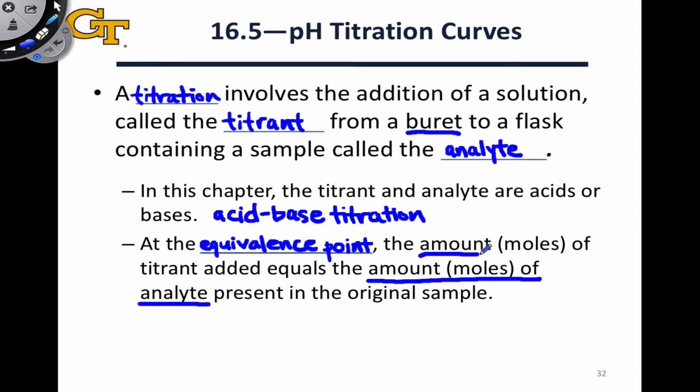The amount of titrant added, let's say we were using the base as a titrant, the amount of base added via dripping out of the burette, is equal to the amount of acid present in the original sample, and we have just added enough base to completely consume the acid according to this irreversible and complete proton transfer from the acid to the strong-base hydroxide.